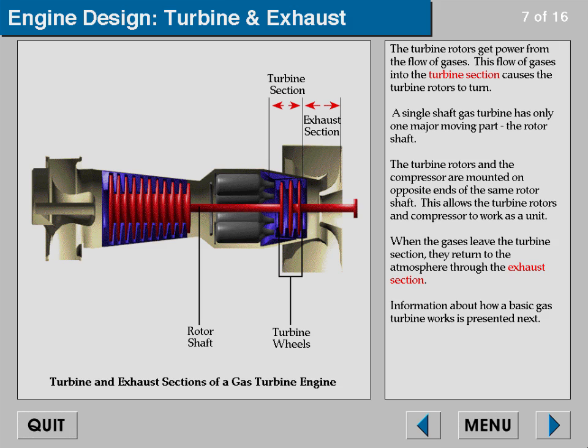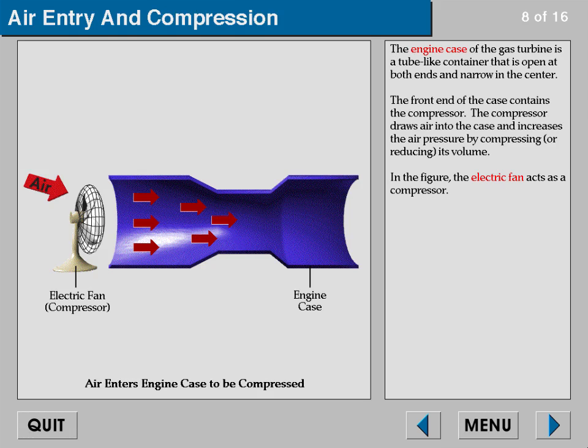When the gases leave the turbine section they return to the atmosphere through the exhaust section. The engine case of the gas turbine is a tube-like container that is open at both ends and narrow in the center. The front end of the case contains the compressor, which draws air into the case and increases the air pressure by compressing or reducing its volume.